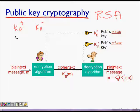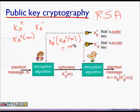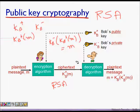When someone wants to send you a message, it will be encrypted using the public key. Then you get the message and you can decrypt it using the private key. This is the essence of public key cryptography, and RSA is one of the algorithms that helps us generate the public and private keys.